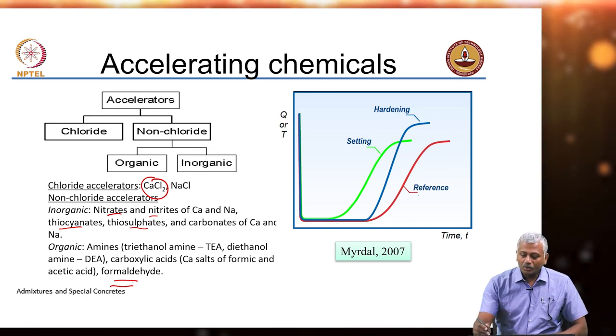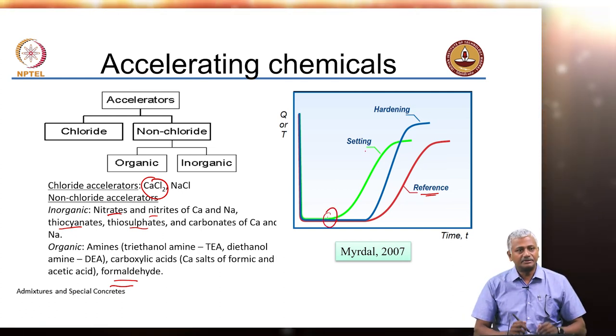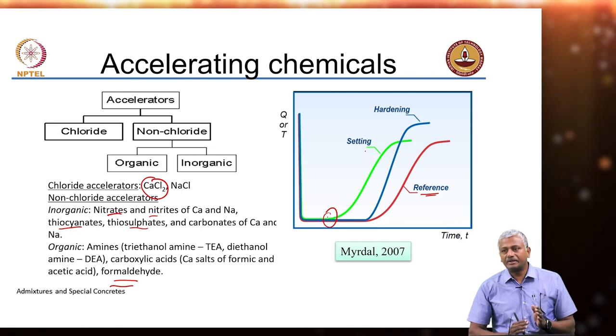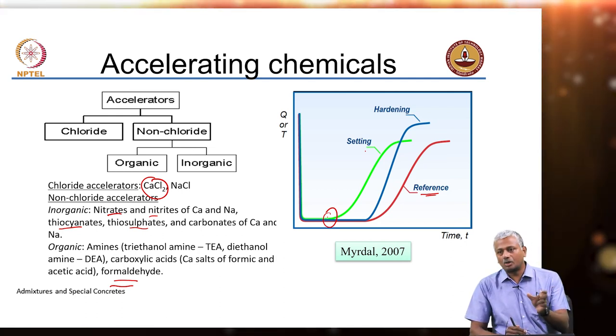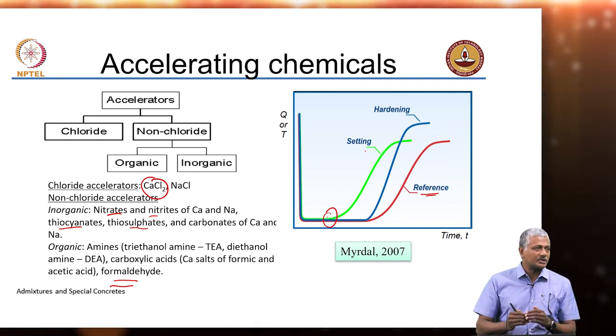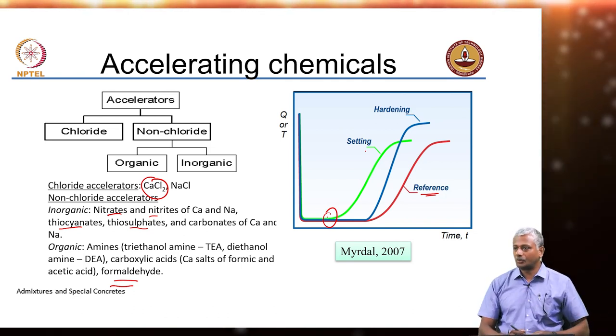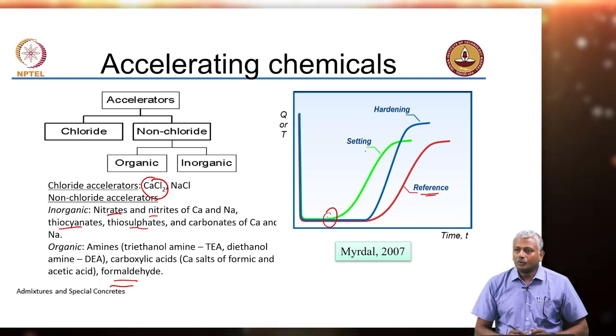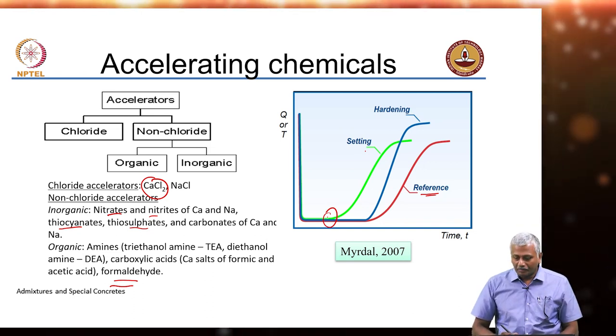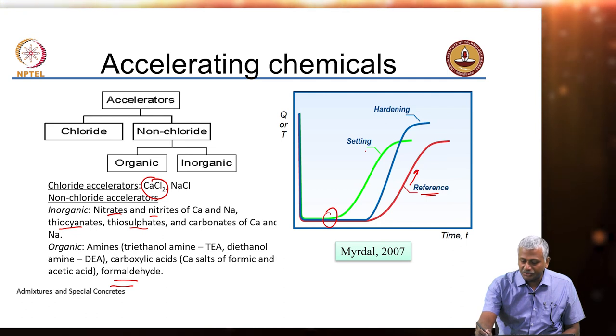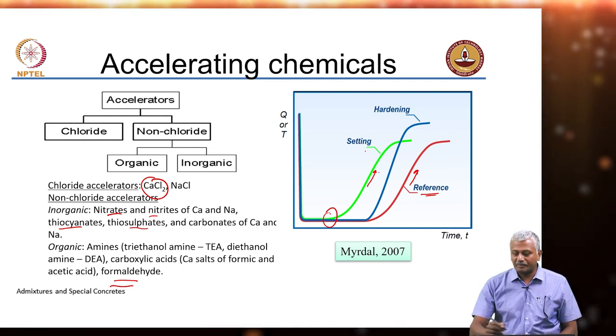Compared to a reference concrete, a setting accelerator will speed up the set. If you remember the heat evolution curve, there was a period which we call the dormant period, during which the reactions are so slow that there is no perceptible heat evolution or rate of heat evolution is very low. Most setting accelerators will tend to lower or reduce the dormant period. But beyond that the rate at which the hardening occurs may not be much different compared to your reference concrete.